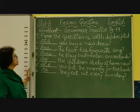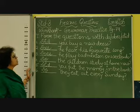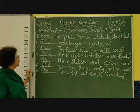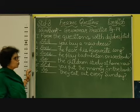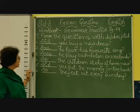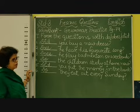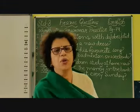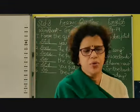So children, these are your answers. Number one: Did you buy a new dress? Number two: Does he hear his favourite song? Number three: Does he play badminton on weekends? Number four: Do the children study at home now? Number five: Did you put the money in the bank? And number six: Do they eat out every Sunday? So in this way, you have to write it in your workbook. Thank you, children.